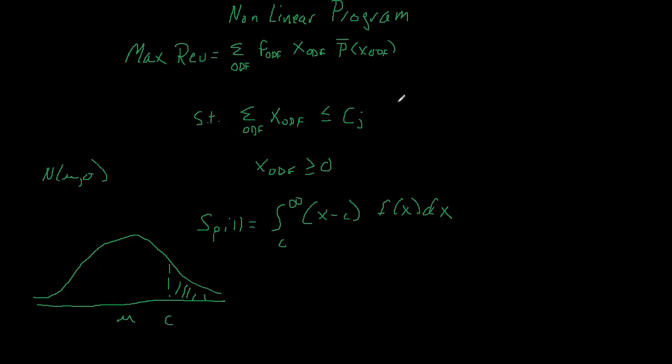So, spill is going to be the integral from C to infinity of the demand that's in X of this capacity constraint. So, we're going to take demand X above C and then multiply that by the f(x)dx by the function. Now, of course, what we're actually after is an estimate of demand. That's often called traffic in the literature when they're talking about nonlinear programs. So, let's use that.